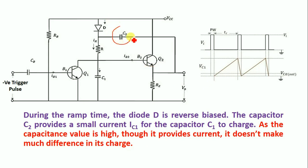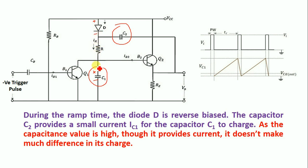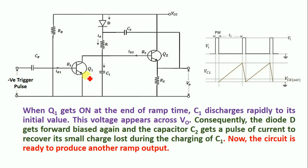Capacitor C2 discharges and capacitor C1 charges. The polarity of C1 is positive on one side and negative on the other. When C1 is charging, diode D gets reverse biased because the positive terminal of C1 faces the positive terminal of D, making it reverse biased.